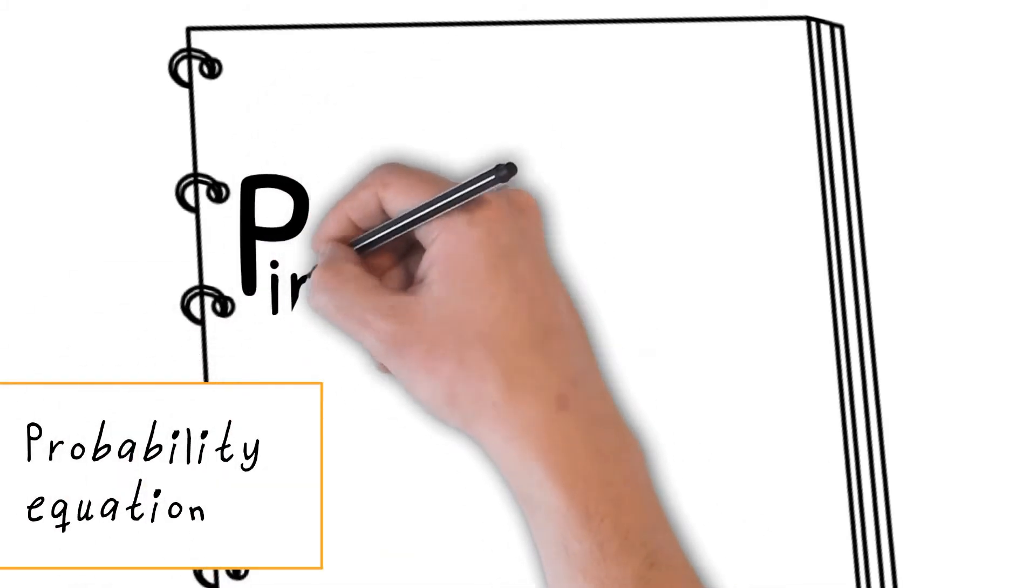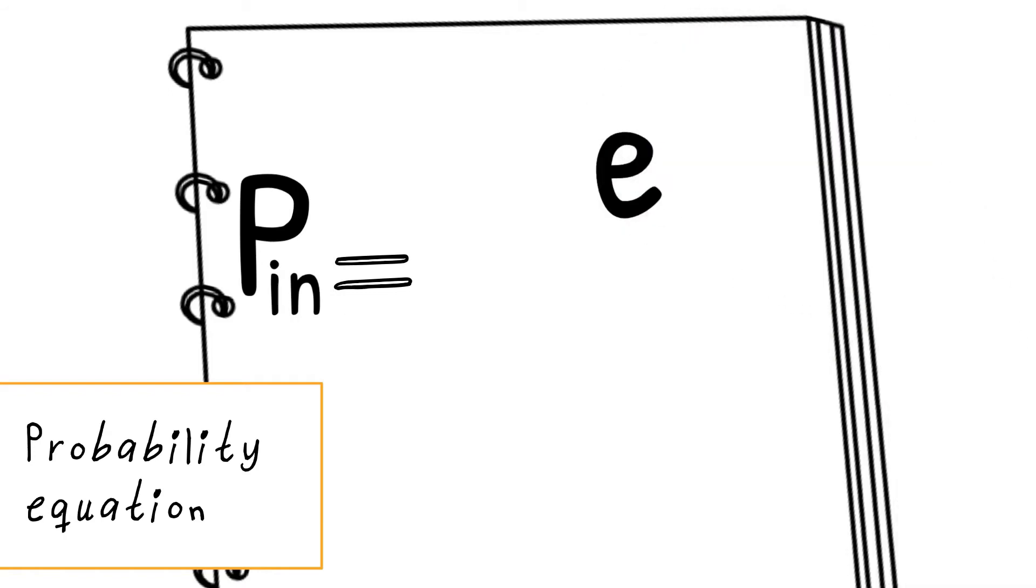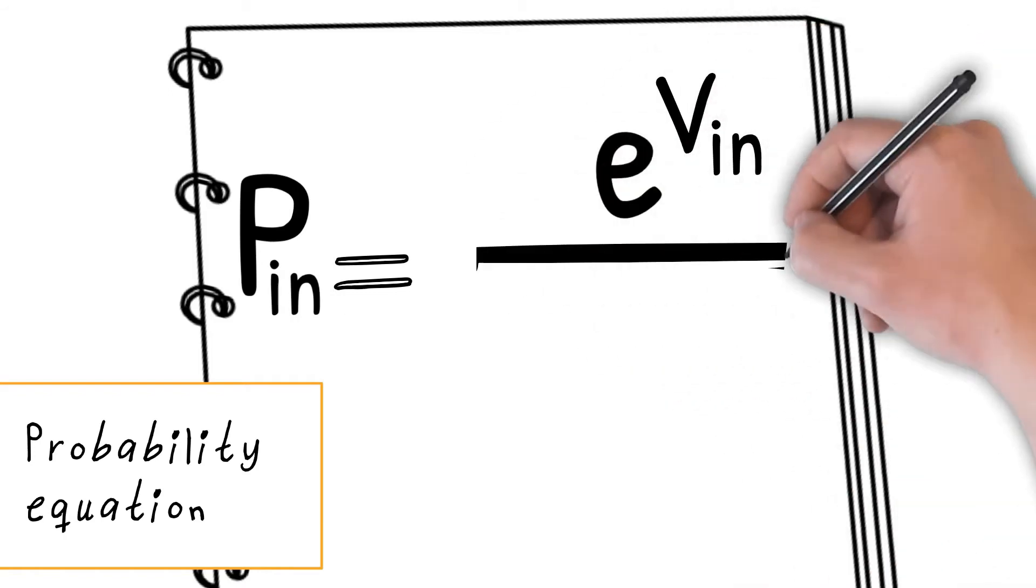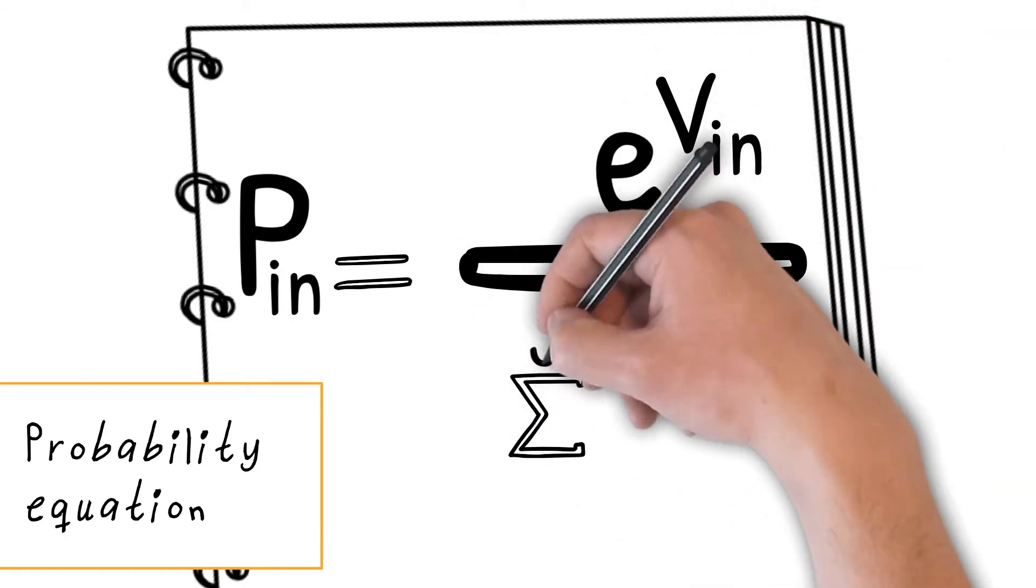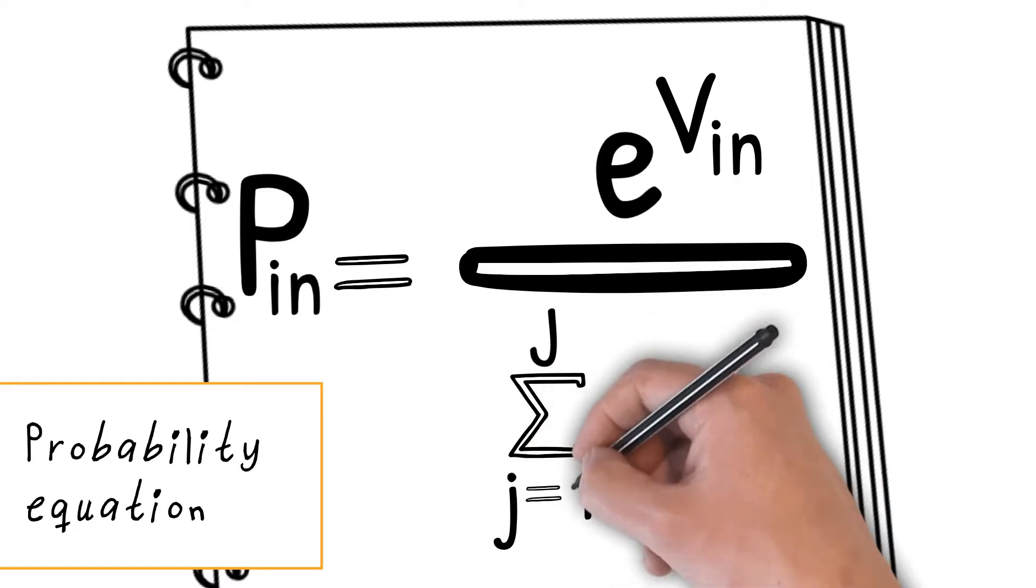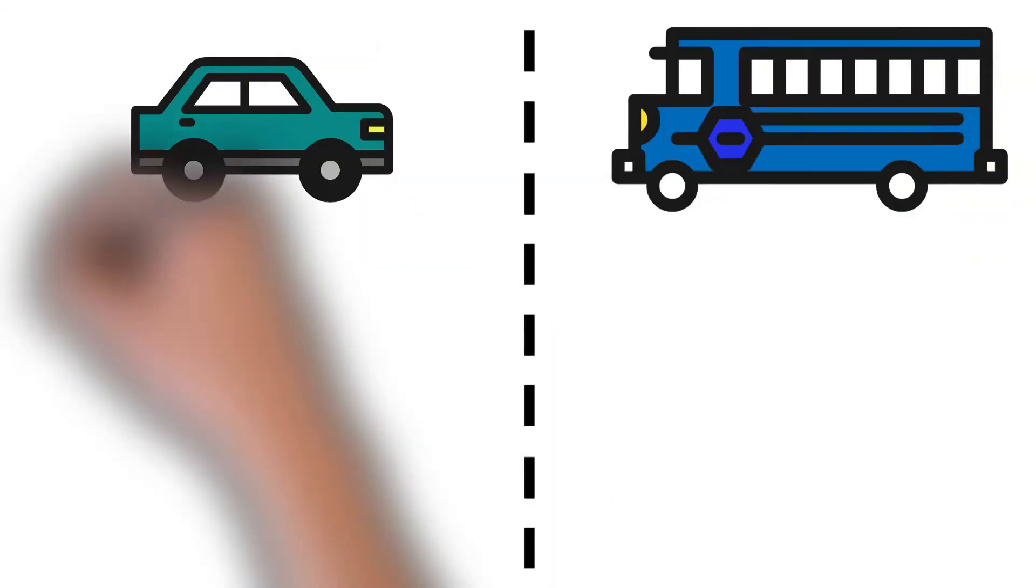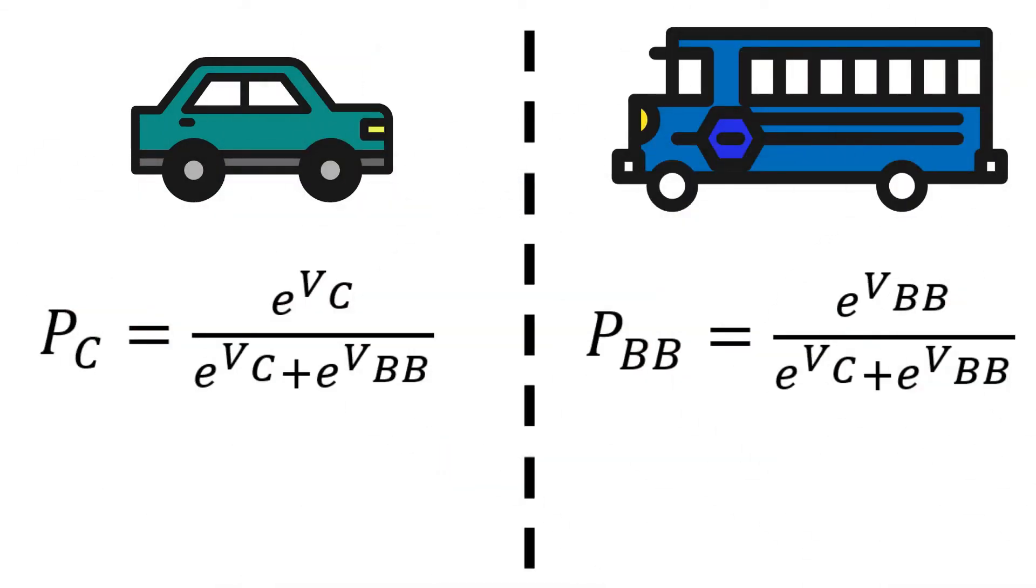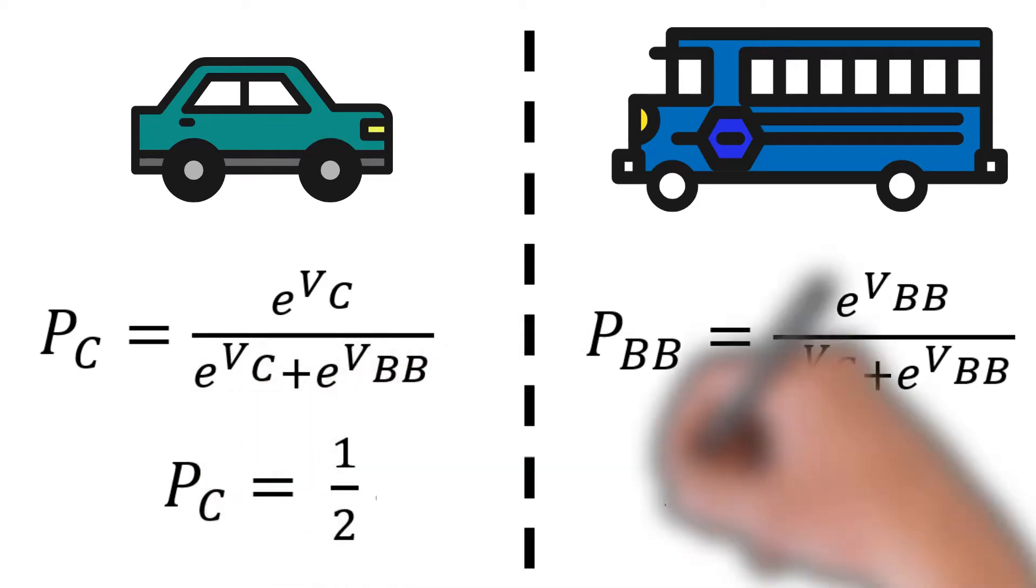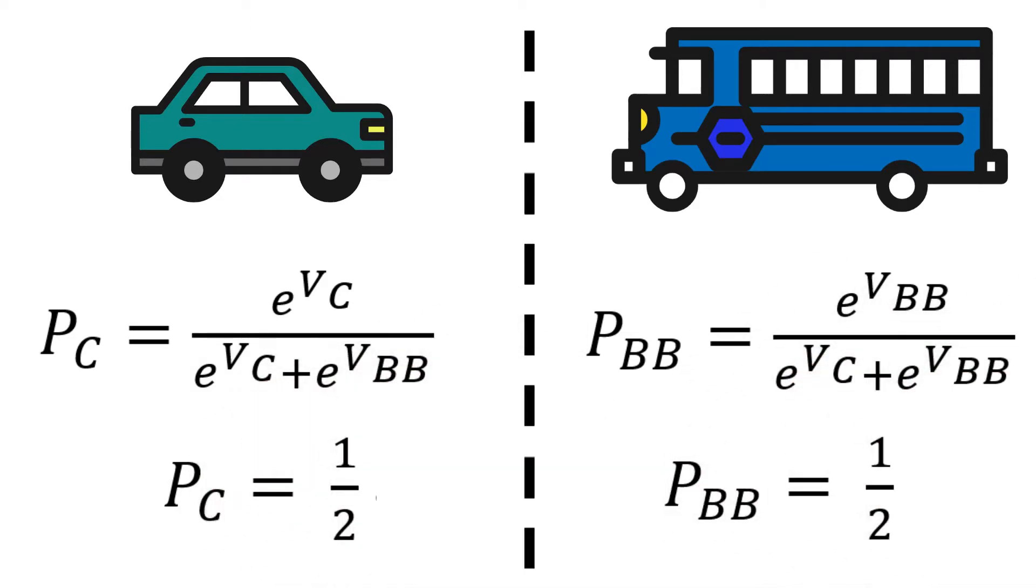Now let us move on to the formula. The probability of an alternative equals the exponential of the utility of that alternative divided by the sum of the exponentials of the total choice set. In our example, for simplicity, we suppose that the probability of choosing either the car or the bus is one half.